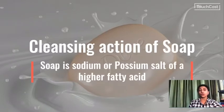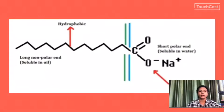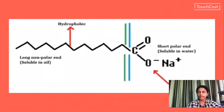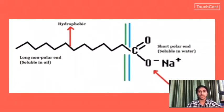Soap is the sodium or potassium salt of a higher fatty acid. In soap's chemical formula, you can see a long chain alkyl group — that is the hydrophobic part, which is oil soluble. At the same time there is a carboxylic acid group, COO-Na+, which is hydrophilic — it is attracted to water, it is water-loving.